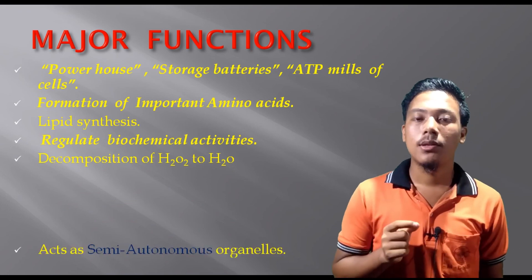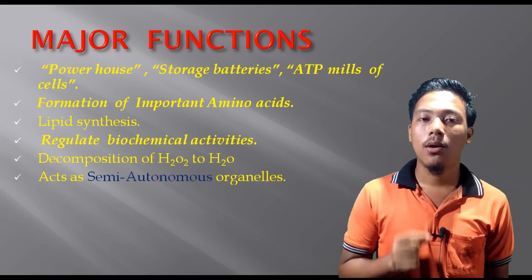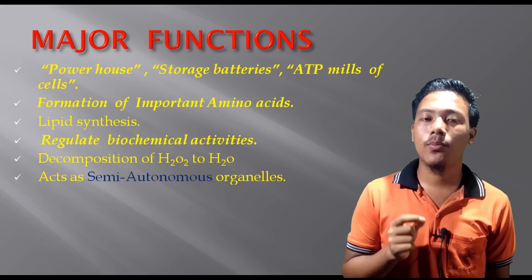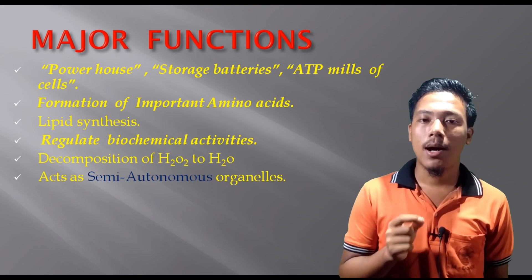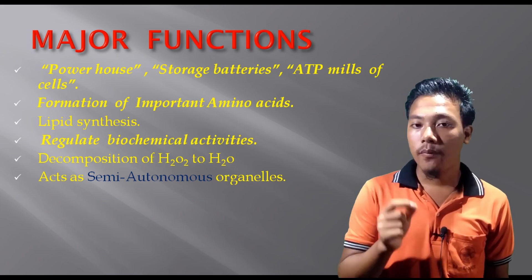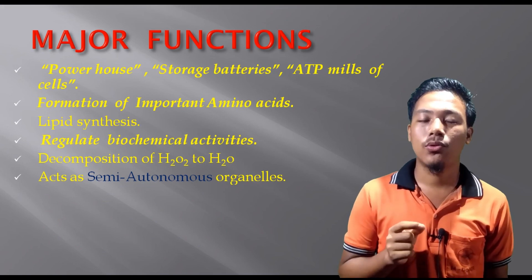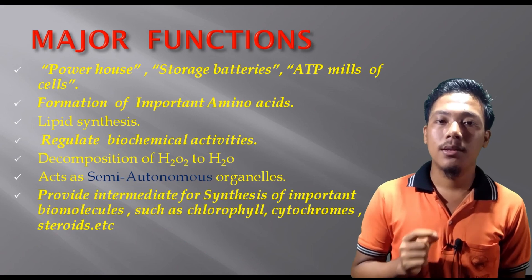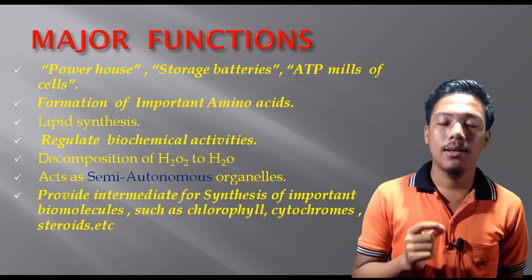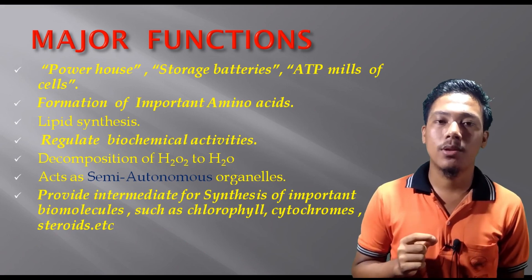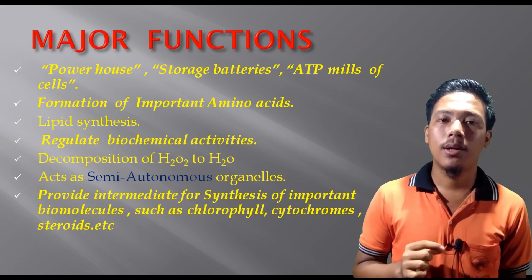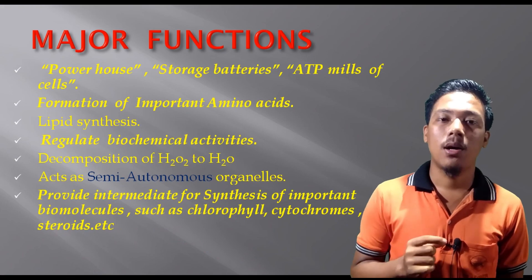Mitochondria is a semi-autonomous organism because mitochondria produce 15% of their own proteins. They have enough lipids, RNA, ribosome, and DNA. Mitochondria also provide intermediates for the synthesis of some biomolecules like steroids, chlorophylls, and cytochromes.